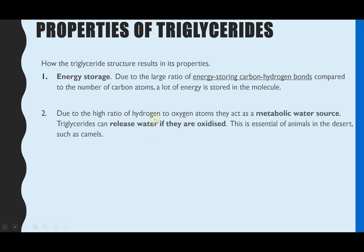We also have a high ratio of hydrogen atoms compared to oxygen, and this enables triglycerides to act as a metabolic water source. What we mean by that is, if the triglyceride is broken down — and in particular if it's oxidised — it's able to form water molecules. This is why lots of desert animals store triglycerides. For example, camels: the hump on their back, unlike the misconception, is not a hump of water — it is actually a hump of triglycerides, which will provide water when oxidised.